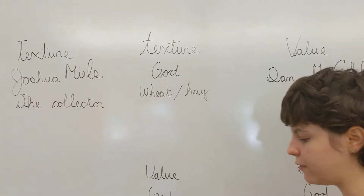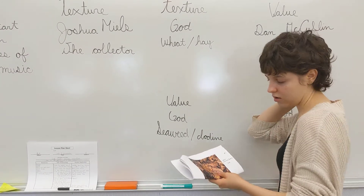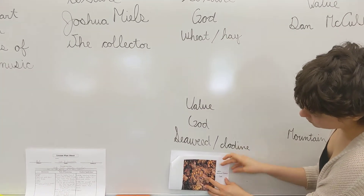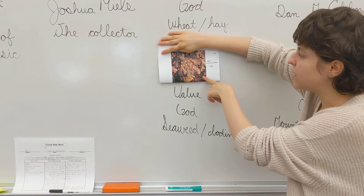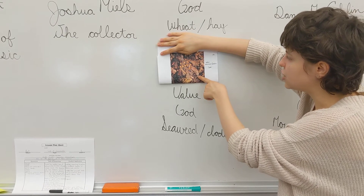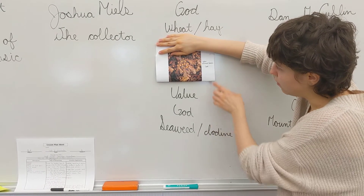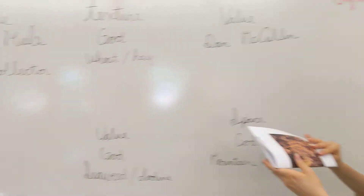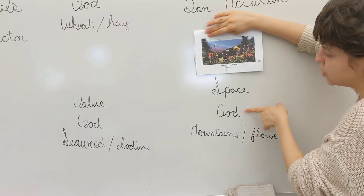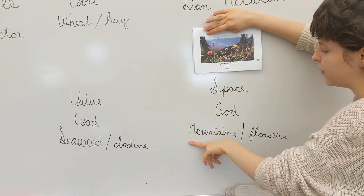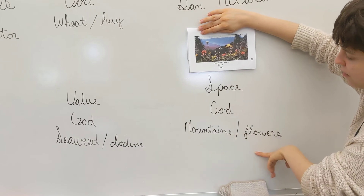Now, if you turn your page over to the last page — we have the iodine slash seaweed. It's dealing with the element of value. It's created by God, and it's called seaweed slash iodine. Write that down on the side. And the last picture at the very bottom of the page with the flower and the mountains — it's dealing with space, it's created by God, and it's just mountains and flowers. Pause and write that down on the page.